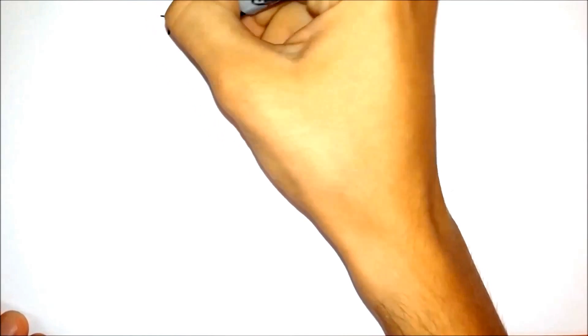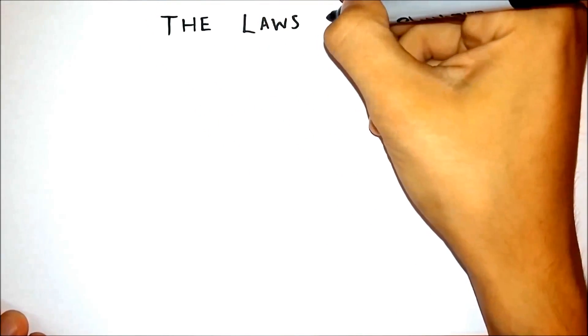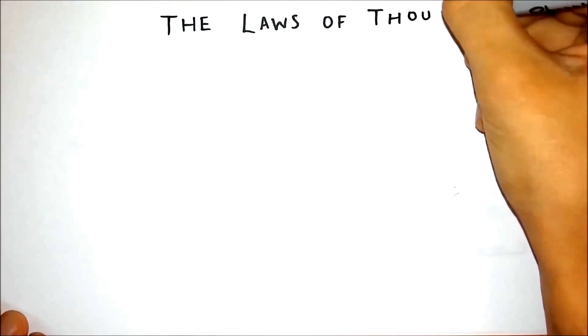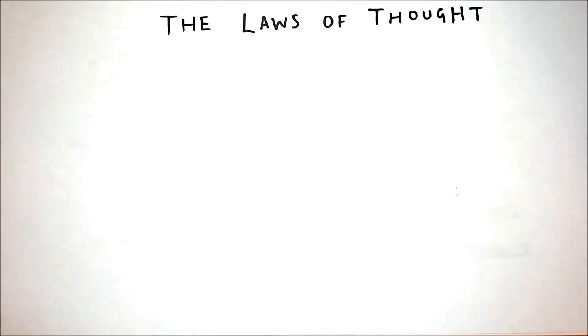There are three such laws, and they are the law of identity, the law of contradiction, and the law of excluded middle.